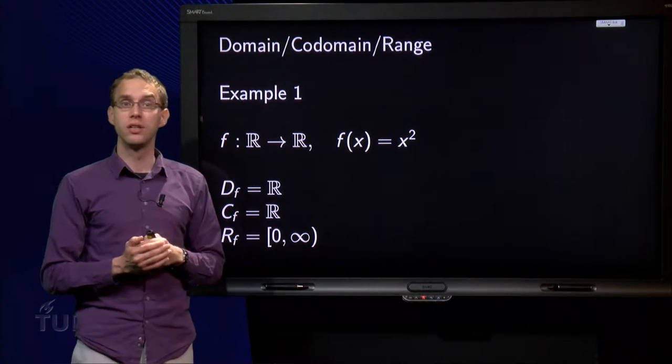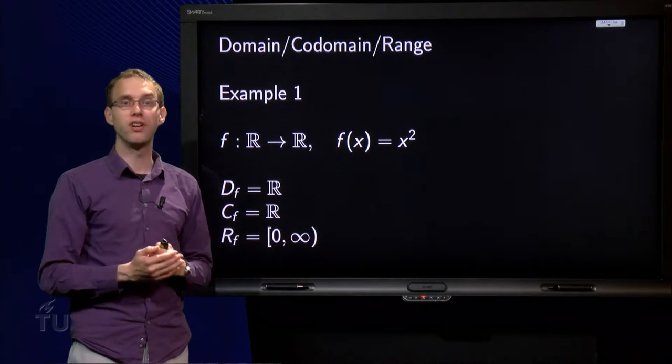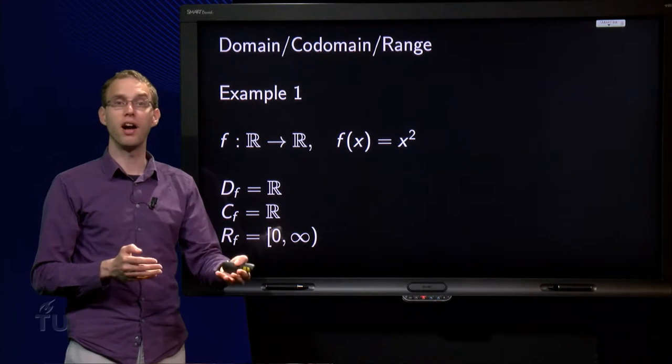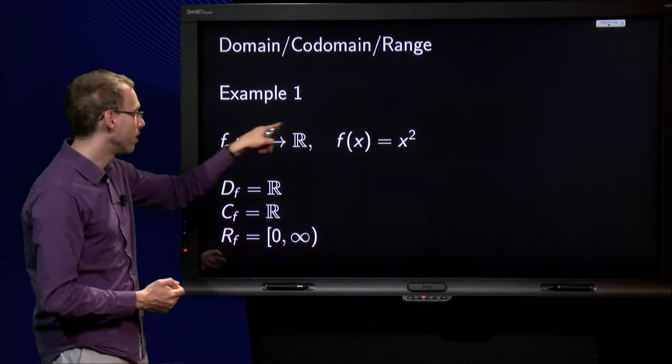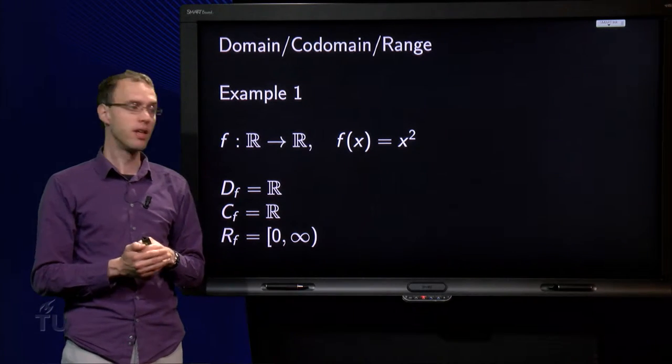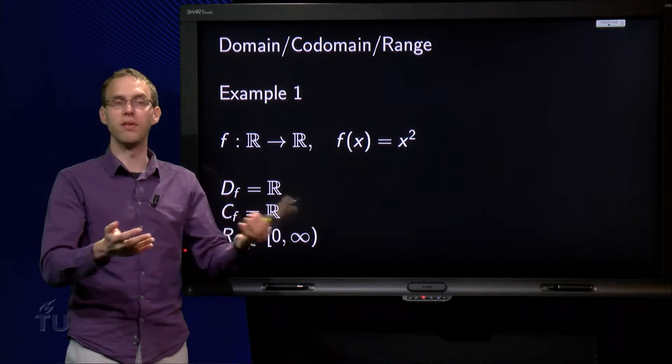Codomain is the set which all output values lie in. If I square a number, I will get another number, so the codomain is R. Domain and codomain, you can write down straight away.